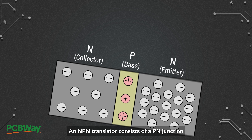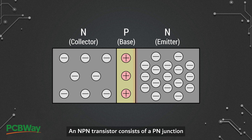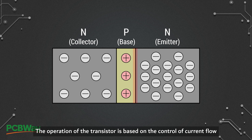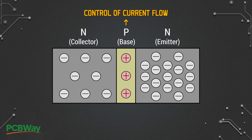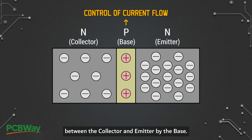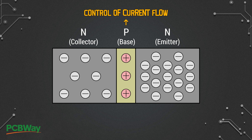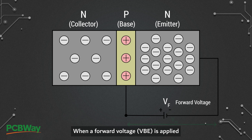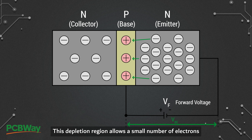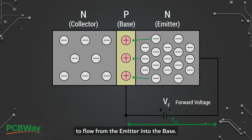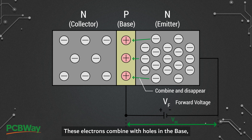An NPN transistor consists of a PN junction between the base and emitter. The operation of the transistor is based on the control of current flow between the collector and emitter by the base. When a forward voltage is applied between the base and emitter, a depletion region forms at the junction. This allows a small number of electrons to flow from the emitter into the base, where they combine with holes, creating a small base current.